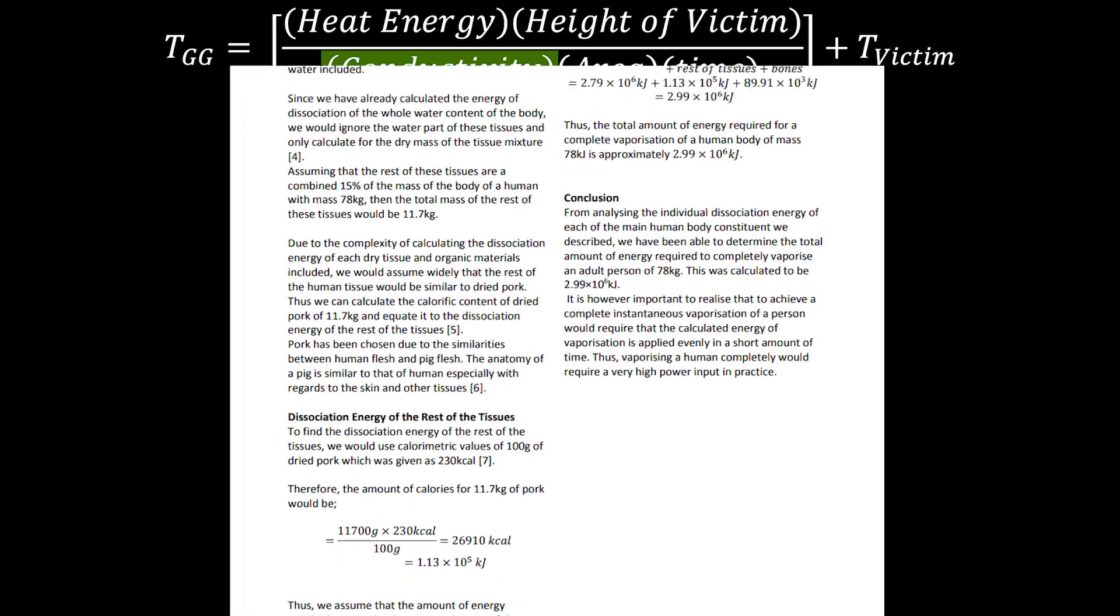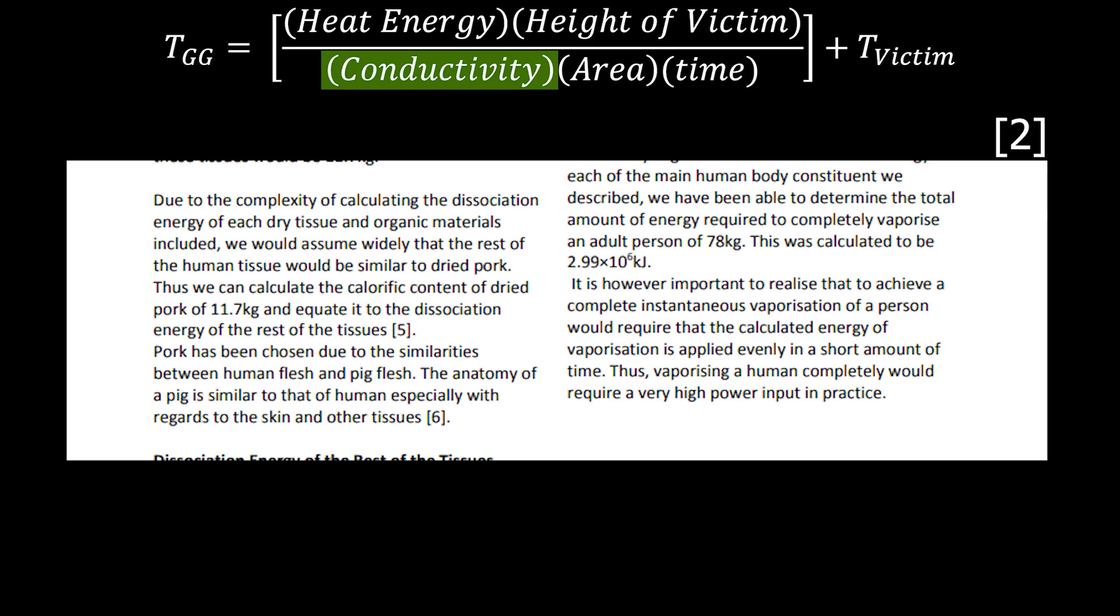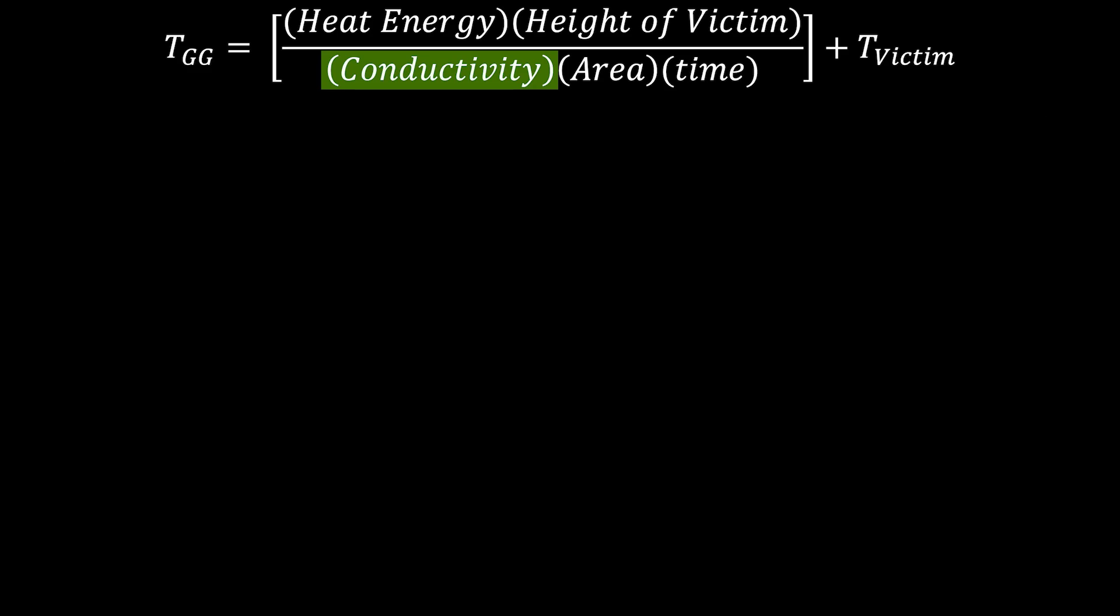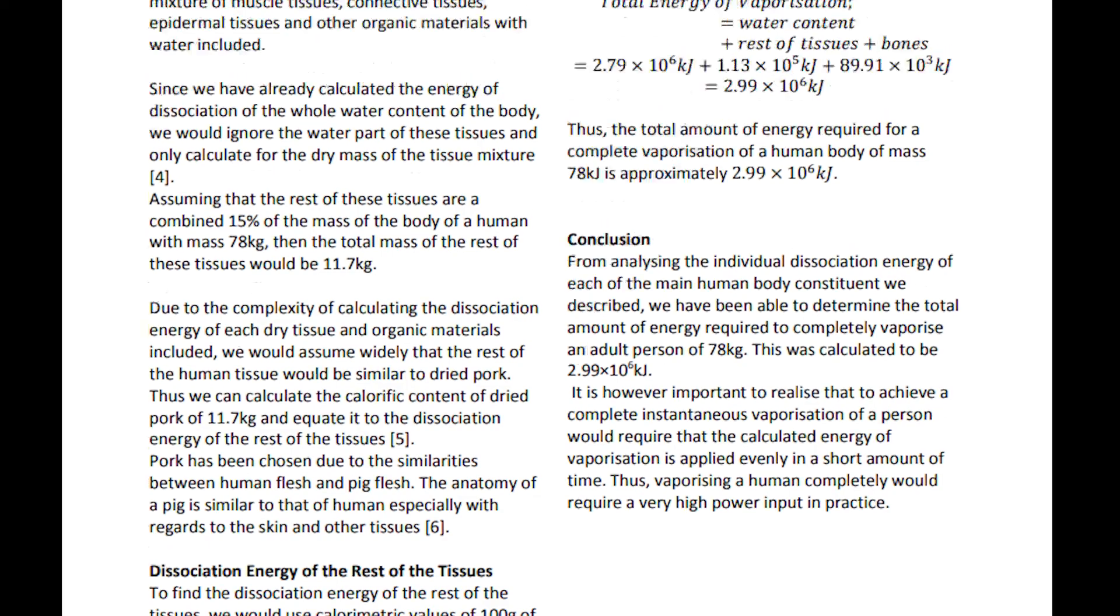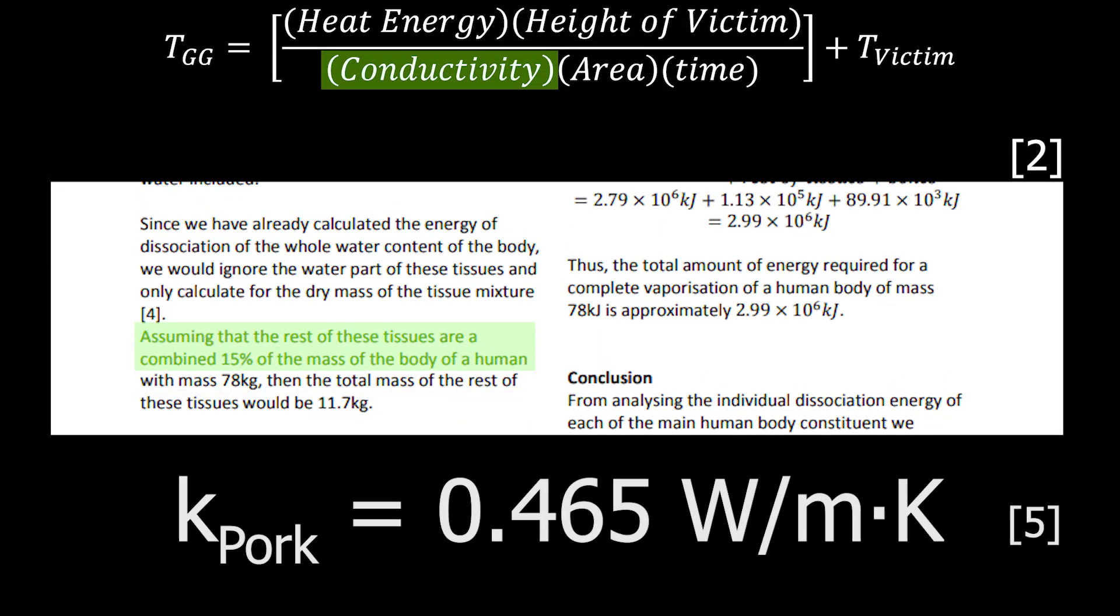We go back to the paper we used before. Since the researchers couldn't actually test on human flesh, because, duh, they used, and I'm being completely serious here, pork to simulate human flesh. Which, I know it seems weird, but it actually is a good analog to it. So, pork has an average thermal conductivity of about 0.46 watts per meter Kelvin.